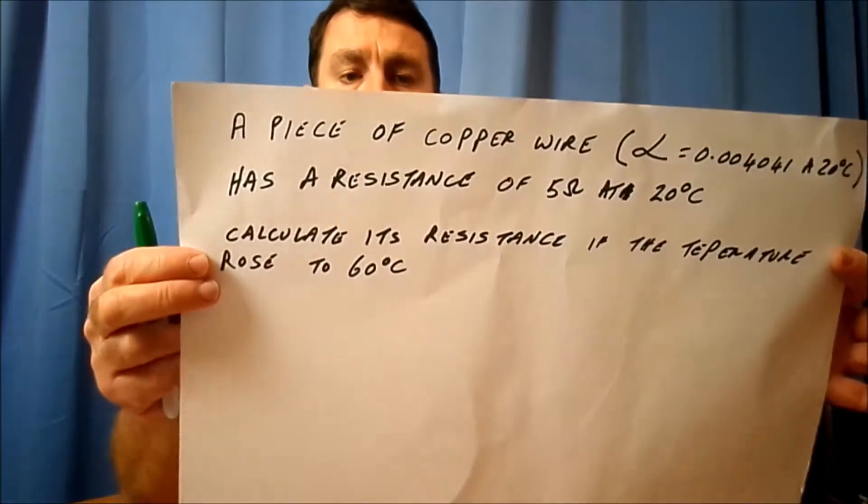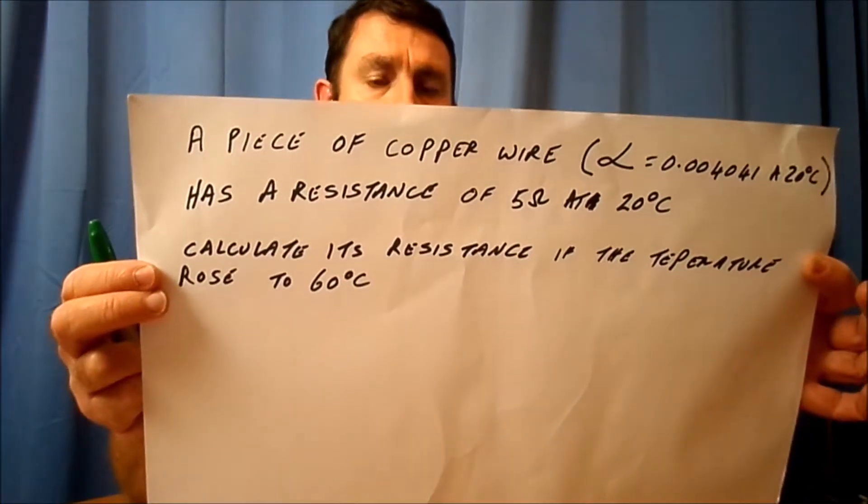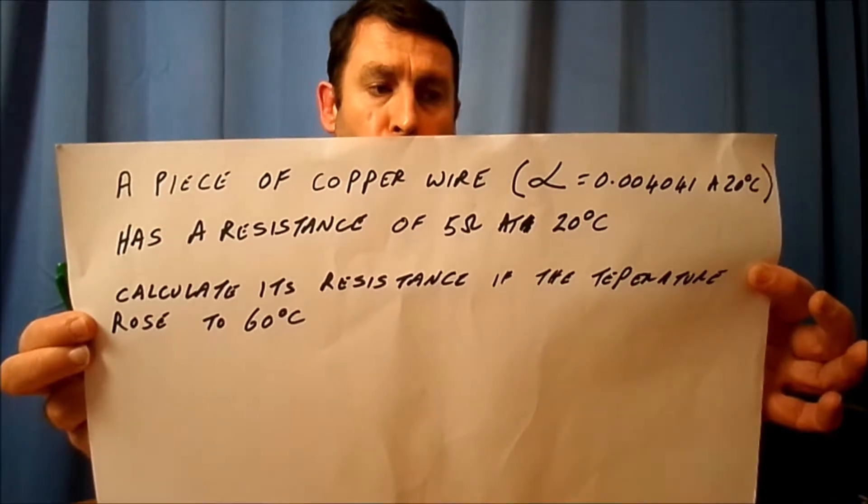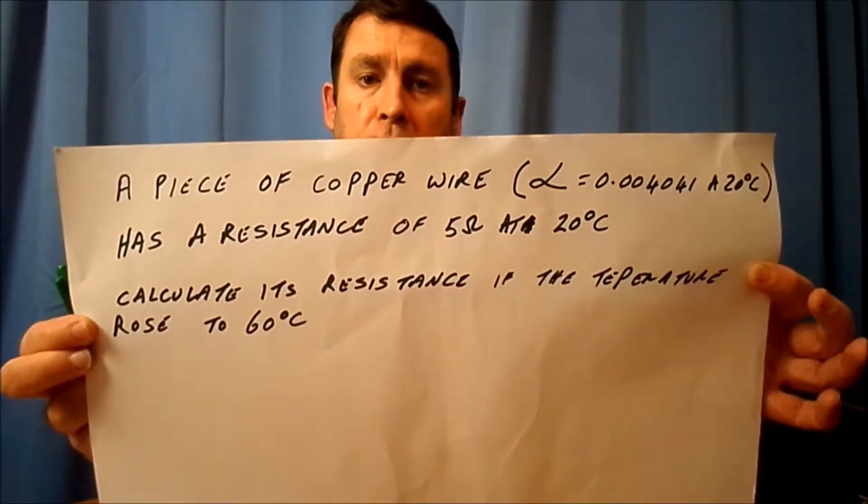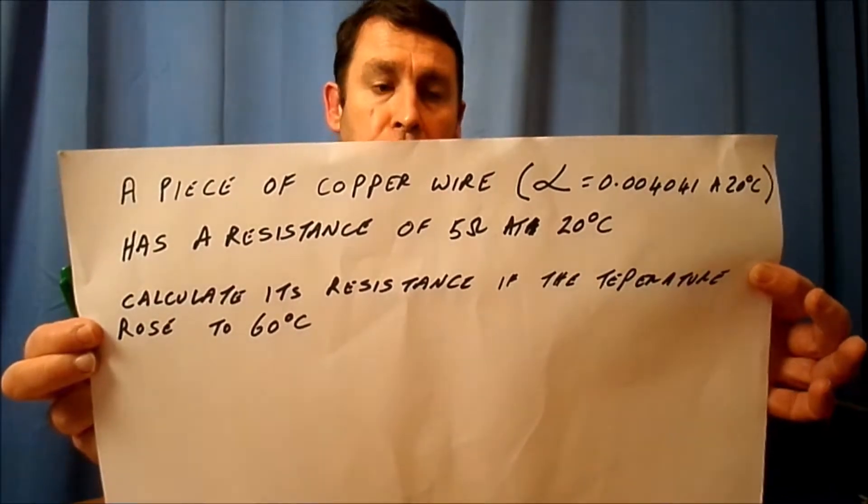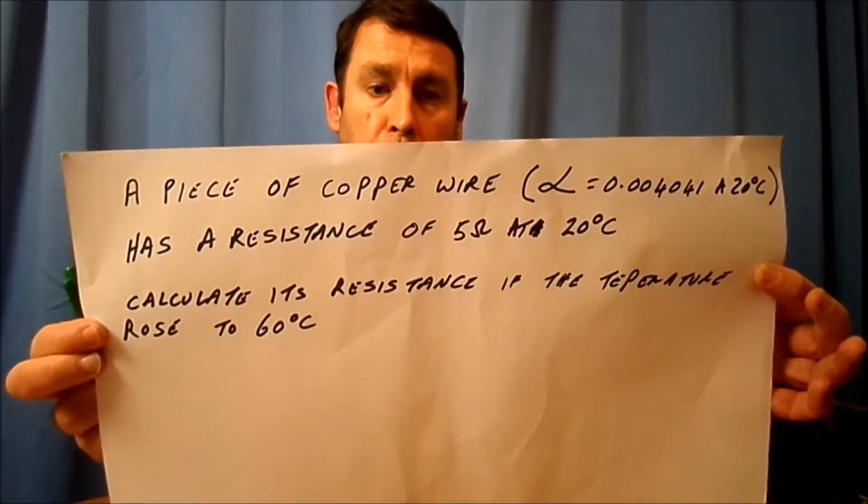Let's have a look at it actually in use. I've prepared a question, so if you want to write that down and then pause, you can. It's a piece of copper wire with a coefficient value alpha of 0.004041 at 20 degrees Celsius - they're usually specified at 20 degrees C or 0 degrees C, and that you will be told.